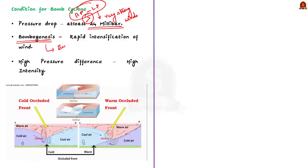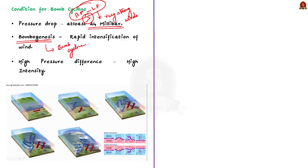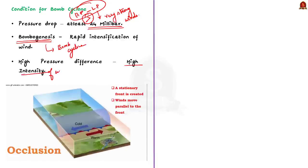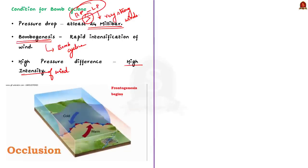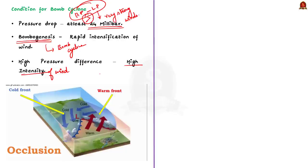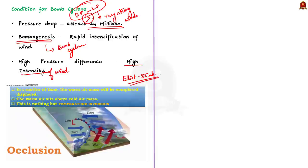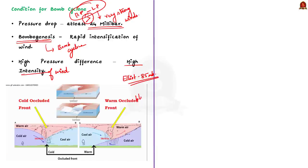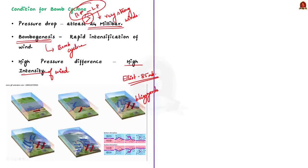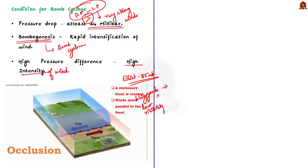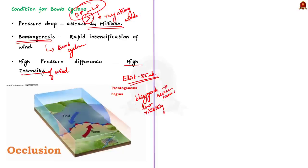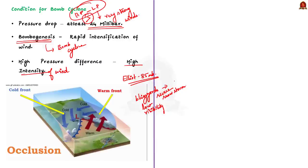The higher the pressure difference, the higher the intensity of wind will be. Basically, a bomb cyclone is a highly intensive temperate cyclone formed due to a huge pressure difference. In the case of cyclone Elliot, which is now in the news, the pressure difference is 85 millibars, and this is why the impact is very huge. The Elliot cyclone caused blizzards, extreme low temperatures, near-zero visibility whiteouts, and ice-covered roads. Blizzards are nothing but a severe snowstorm which results in strong winds and low visibility.